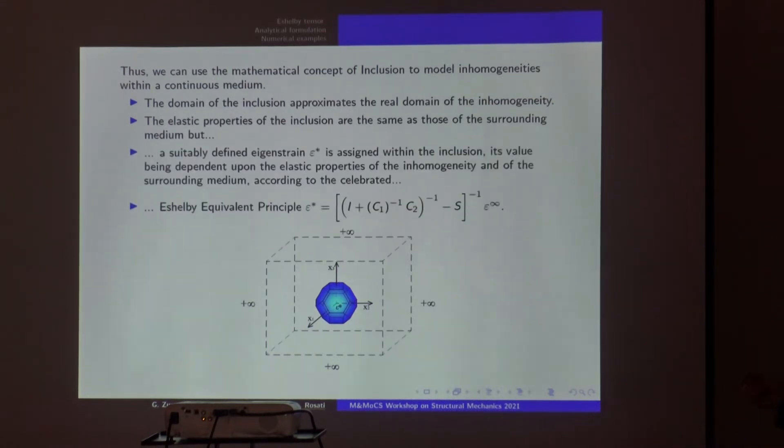The Eshelby equivalent principle means that I replace the real continuum C2 with the same continuum, the same elastic properties of the hosting medium, but the price you have to pay is that you insert within your inclusion another tensor. This tensor is constant if this is an ellipsoid, but it varies pointwise, it changes pointwise, if the shape is arbitrary.